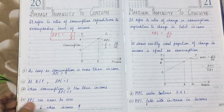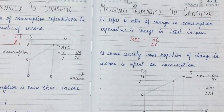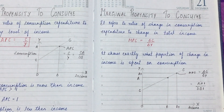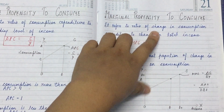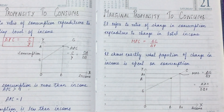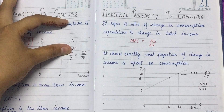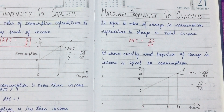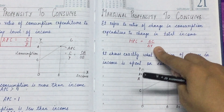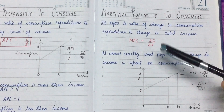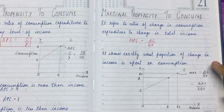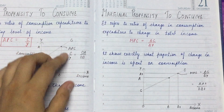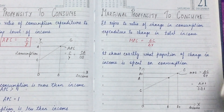Now we move on to Marginal Propensity to Consume (MPC). Whenever we study 'marginal,' it always tells us about change — how much change is happening. So the definition: MPC refers to the ratio of change in consumption expenditure to change in total income. When your income increases and your consumption also changes, the ratio of that change is called Marginal Propensity to Consume. Its formula is ΔC upon ΔY — changed consumption upon changed income.